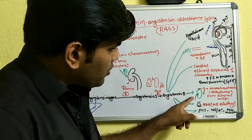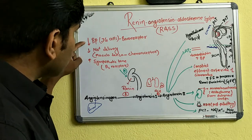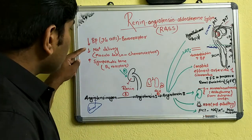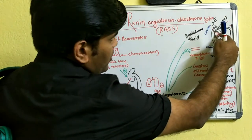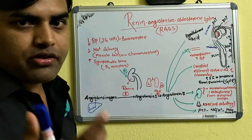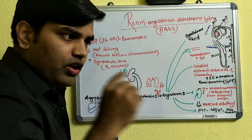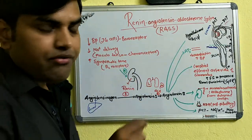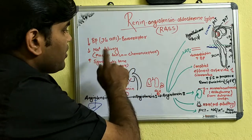The system works as follows: normally when there is a drop in blood pressure, that blood pressure is sensed at the afferent arteriole. Here is the juxtaglomerular apparatus, and the JG cells are located in the media of the afferent arteriole. If there is a decrease in blood pressure, it will be sensed by the JG cells acting as baroreceptors, which then stimulate the juxtaglomerular apparatus to release renin.